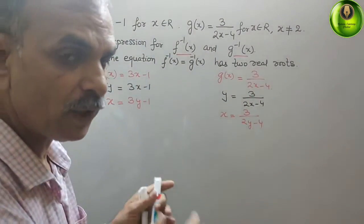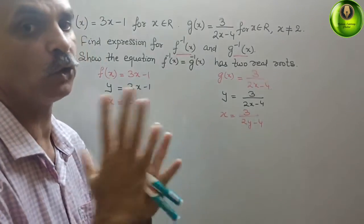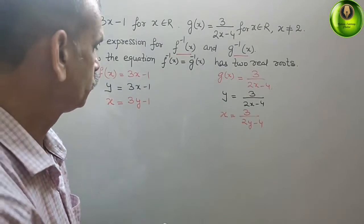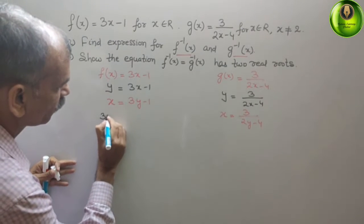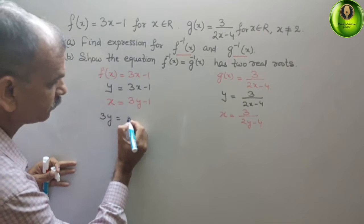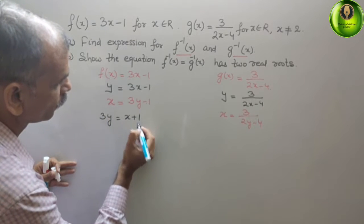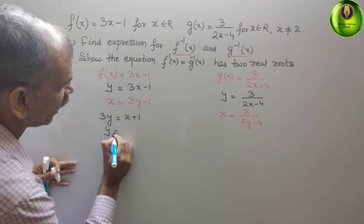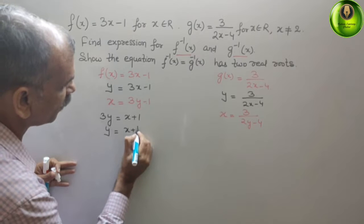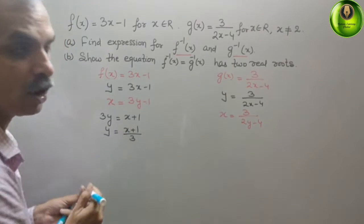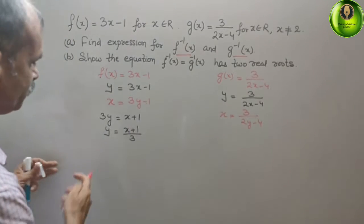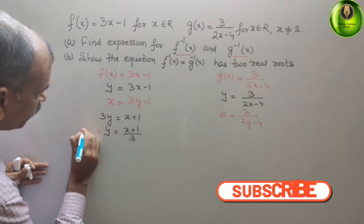Now we have to rearrange for y only. So you can see here, 3y equals x plus 1. So what is your y? y equals x plus 1 by 3. This is nothing but your f inverse.